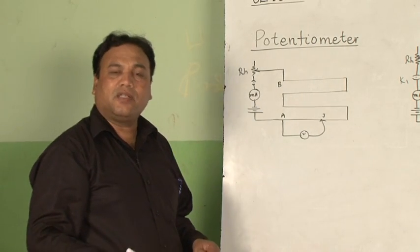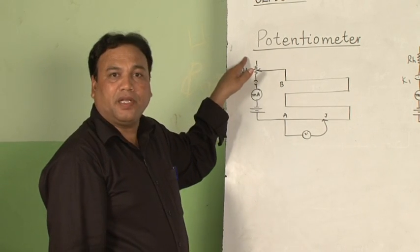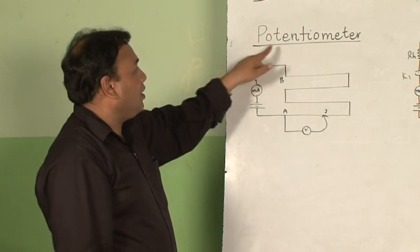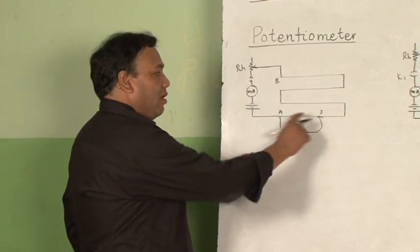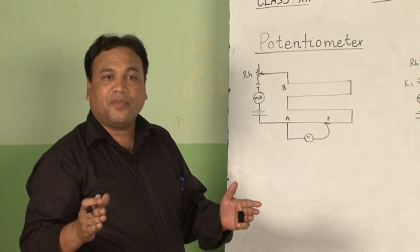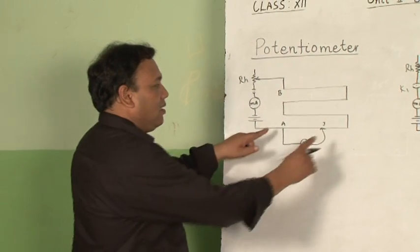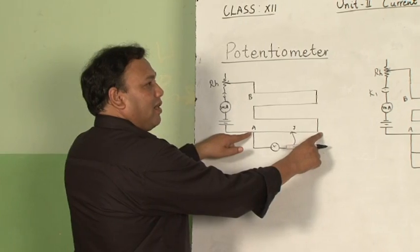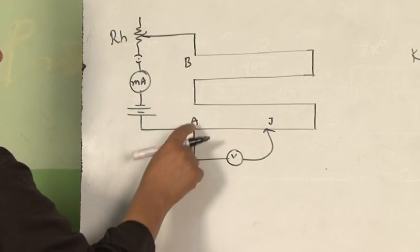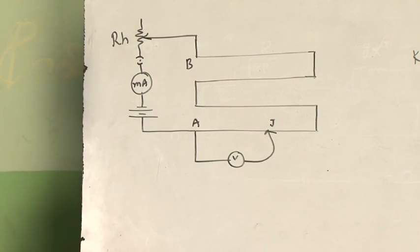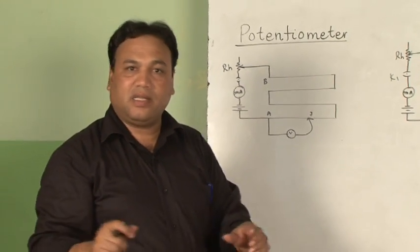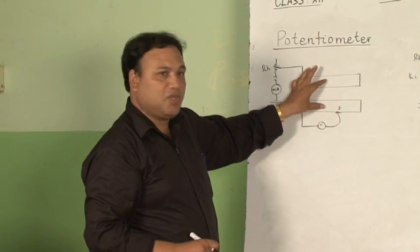The last topic of this unit, current electricity, is the potentiometer and its applications — this is a sure short question topic. A potentiometer consists of a 4-meter long wire divided into 4 segments of 1 meter each, from 0 to 100 centimeters, then to the second, third, and fourth meter. This means this is the 0 centimeter point and this is the 400 centimeter point.